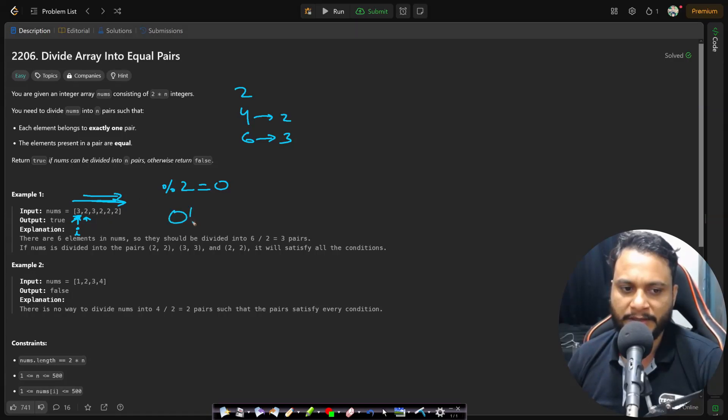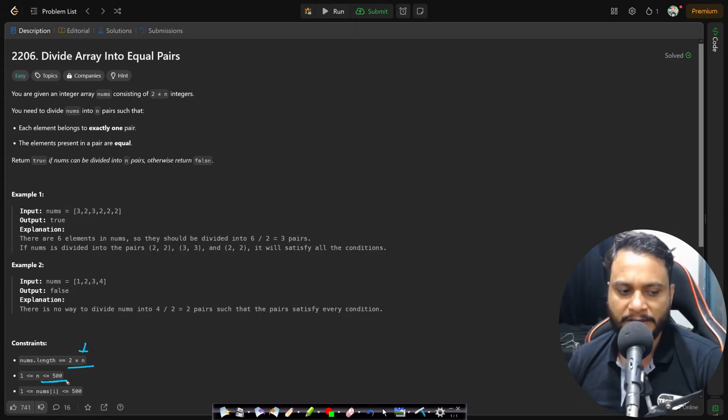If you follow that approach it will take order of n square time. But let's see the constraint here. The nums.length will be maximum 2 times n and n is only less than or equal to 500. So if you write an n square algorithm, that will be 2.5 times 10 to the power of 5, which is way less than 10 to the power of 8. Therefore this will pass, even the brute force approach will pass.